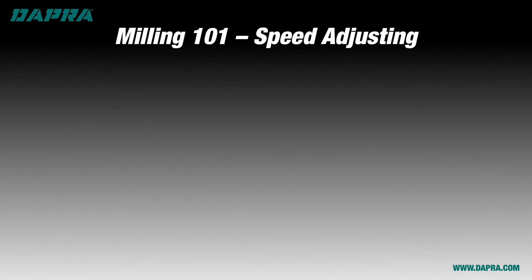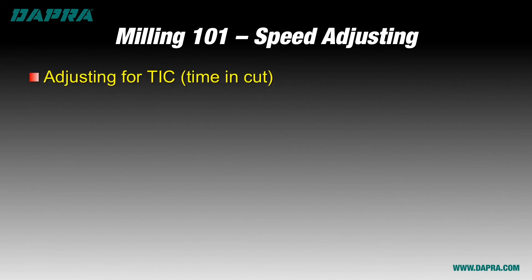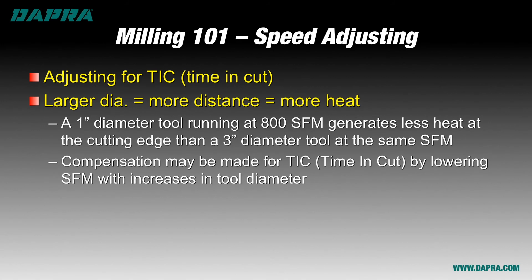A note about speed: keep in mind that work equals force times distance. When using a larger diameter cutting tool, you will create more heat than with a smaller diameter cutter, due to a longer time in cut. Because of this, an adjustment may need to be made to the SFM chosen for the application. If the SFM that works well for a one-inch cutter is also used for a two- or three-inch cutter, expect shorter tool life with the larger cutters. If that's acceptable, no problem. Otherwise, adjust the SFM downward by perhaps 20 to 25 percent to compensate for the increase in heat with the larger tools.